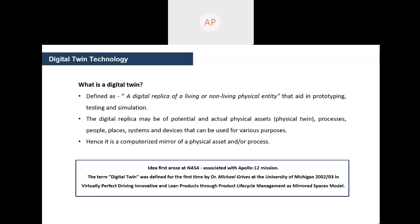A digital replica is of a potential and actual physical asset, process, people, places, system, and devices — it could be of anything, which could be used for various purposes. Thus, we can say that a digital twin indeed is a computerized mirror of a physical asset or a process.